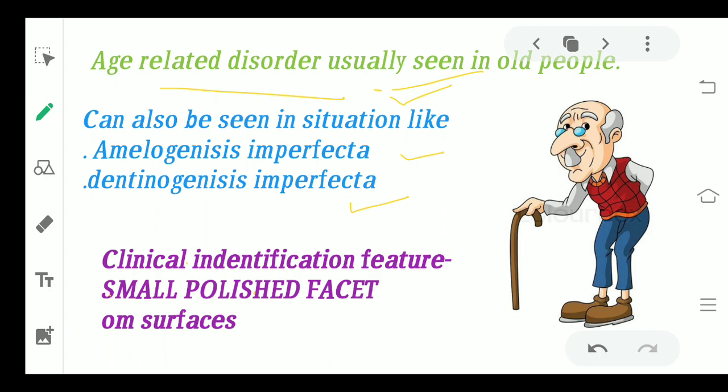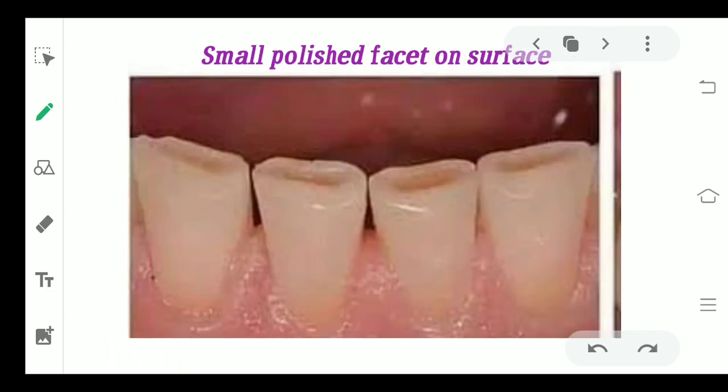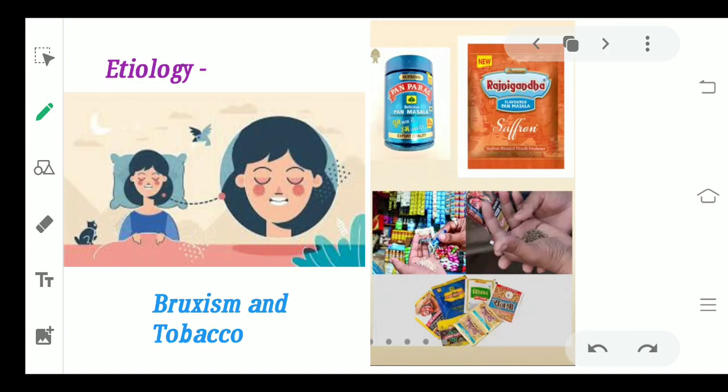For clinical identification — very important if a patient is sitting in the dental chair — how do you identify attrition versus abrasion or erosion? The key feature to keep in mind is the appearance of small polished facets. These line-like structures visible on the incisal edge are called facets, and whenever facets are present on the tooth surface, it indicates a case of attrition.